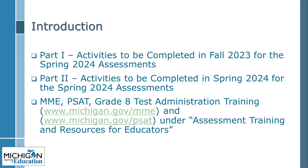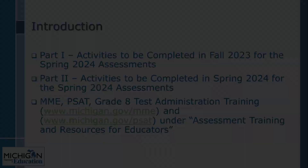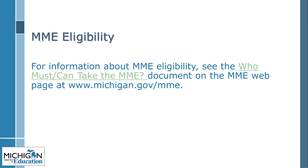For the 23-24 academic year, MME and PSAT and high school test administration training Part 1 activities included those that needed to be completed in Fall 23 for the Spring 24 assessments, and Part 2 trainings include those activities to be completed in Spring 24. You can access both Part 1 and Part 2 test administration trainings on the MME and PSAT webpages under Assessment Training and Resources for Educators. For current information about Michigan Merit Exam eligibility for Michigan juniors and seniors, see the Who Must/Can Take the MME document on the MME webpage.